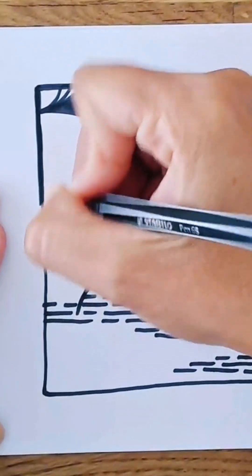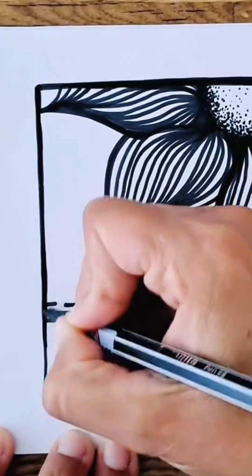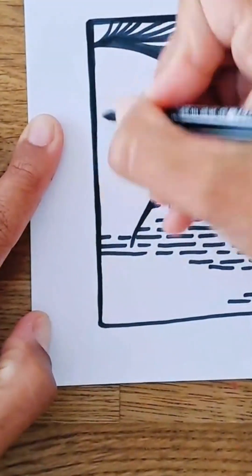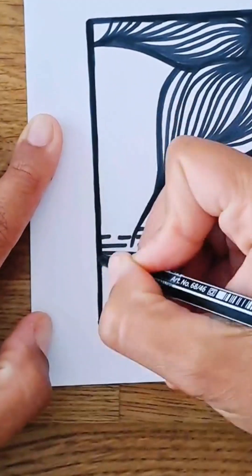As you'll see here, I just thicken up one side and then I go ahead and I thicken up the other side, and it just creates a nice bold line.